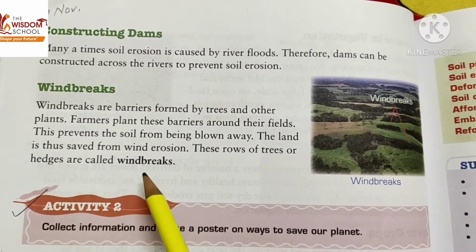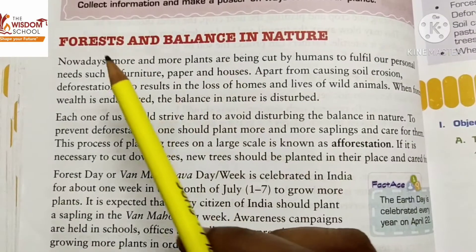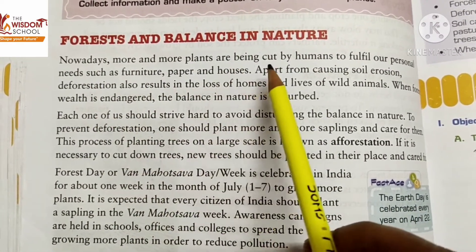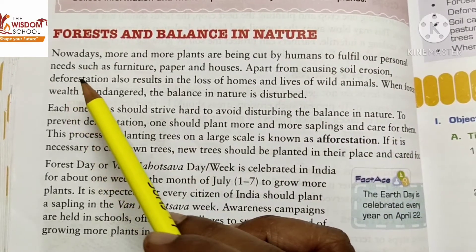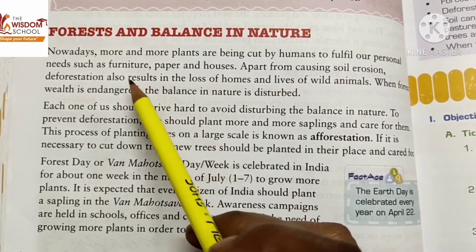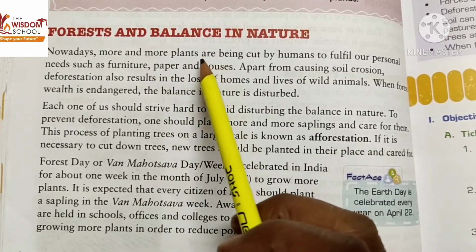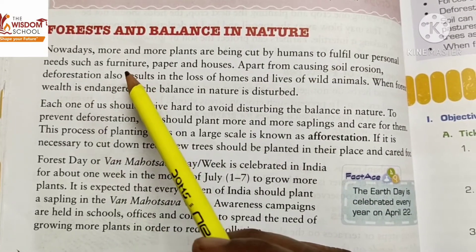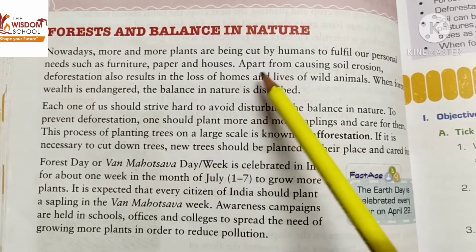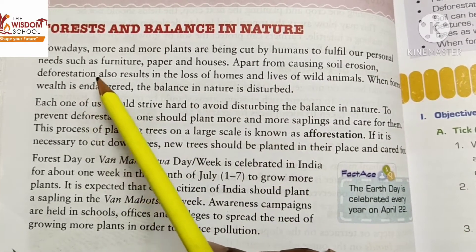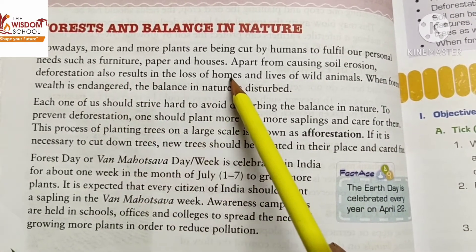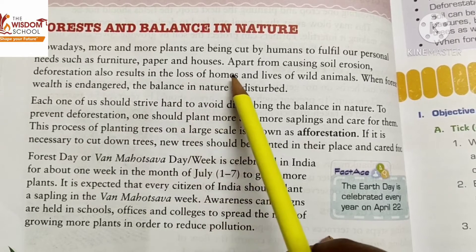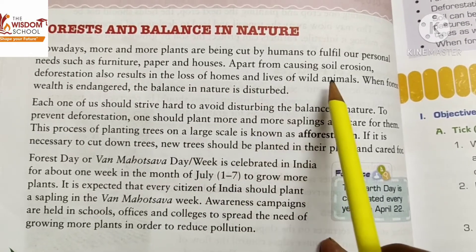Nowadays more and more plants are being cut by humans to fulfill personal needs such as furniture, paper, and houses. Apart from causing soil erosion, deforestation also results in the loss of homes and lives of wild animals.